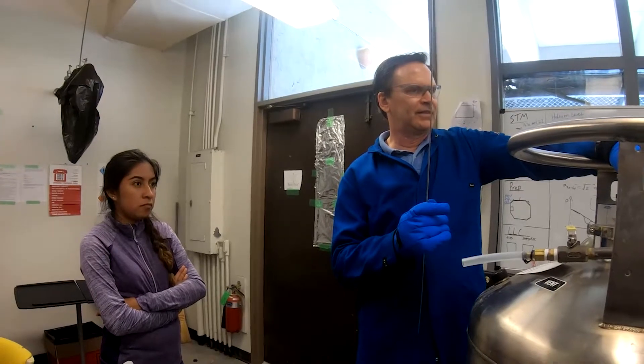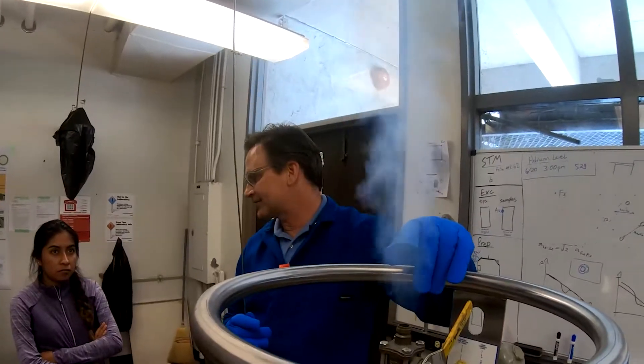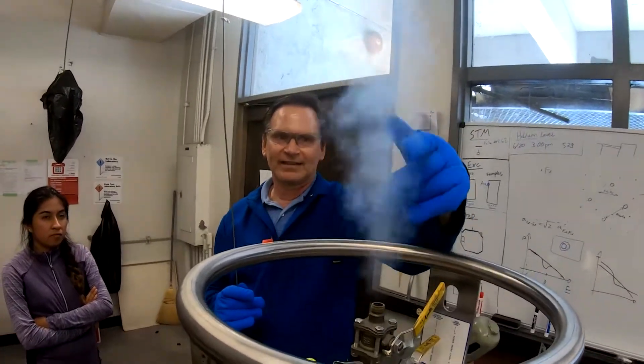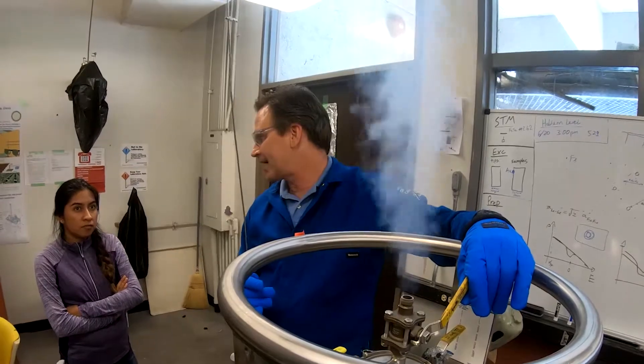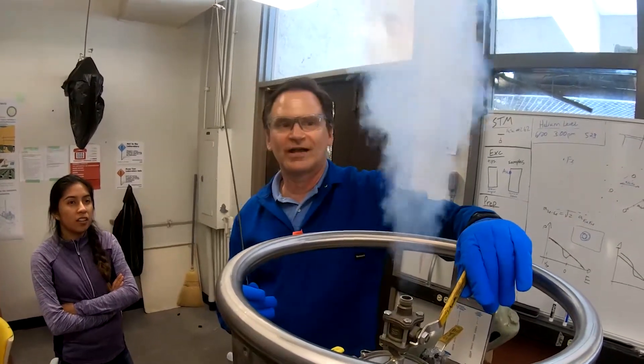We're going to slowly open up the top of the dewar. So cold, the gas is so cold, helium is an invisible gas. We're getting this white plume here because it's making water vapor freeze out of the atmosphere. And that's why it's visible.